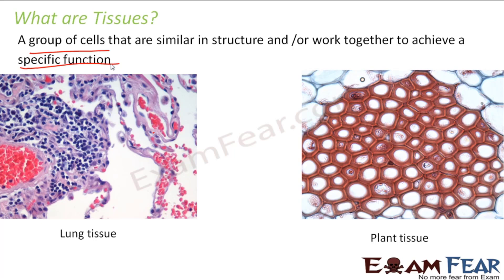Every living organism is made up of cells, so every living organism also consists of tissues. We are talking about multicellular organisms because in the case of a unicellular organism, you just have one cell, so that one cell can perform everything. There is no concept of tissues in a unicellular organism. So whatever we are going to talk about relates to multicellular organisms.